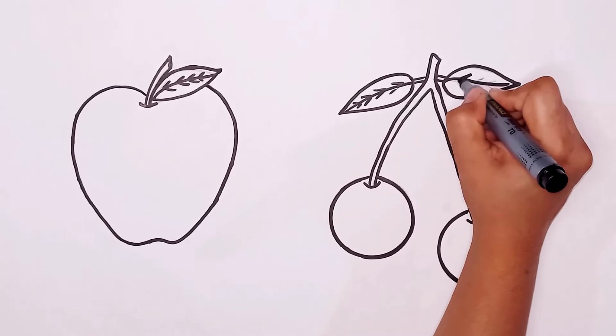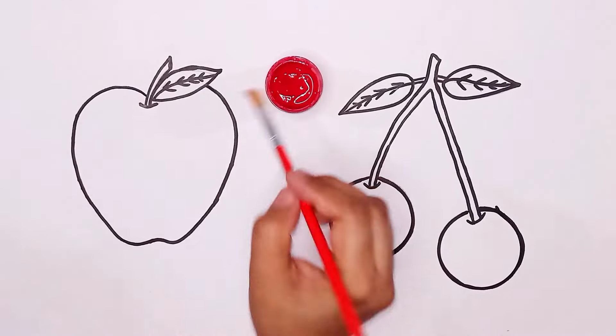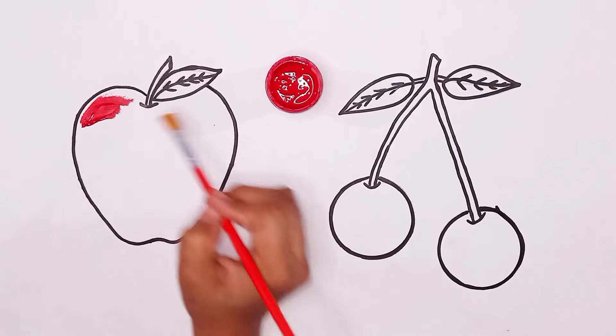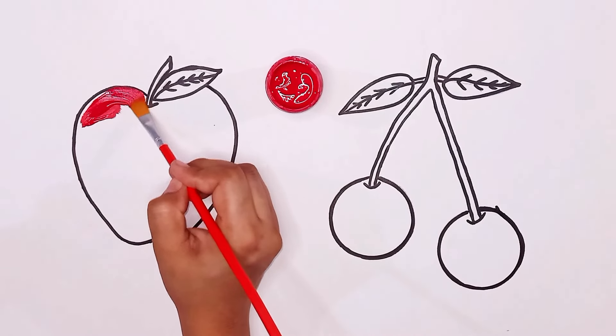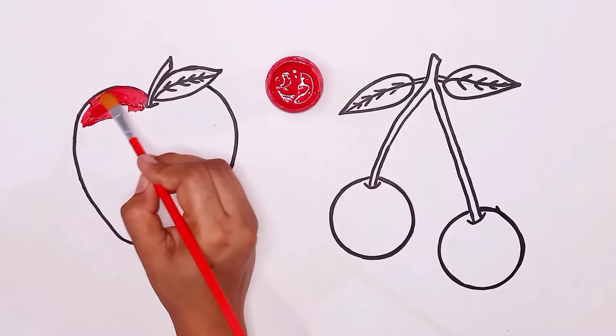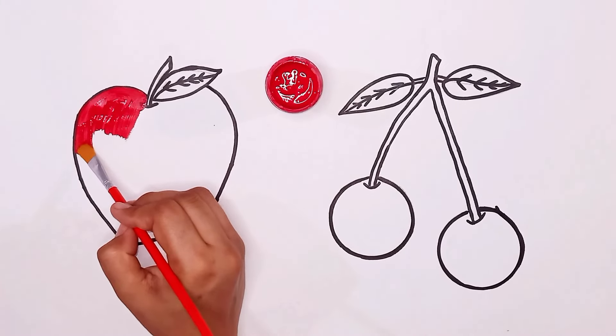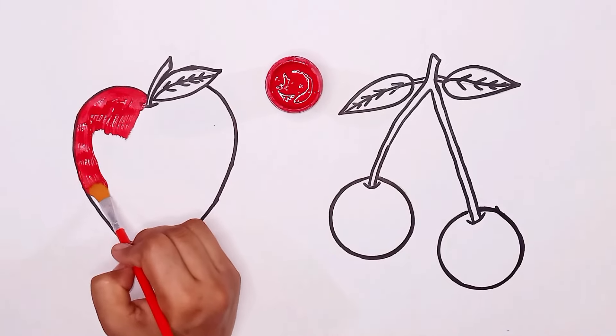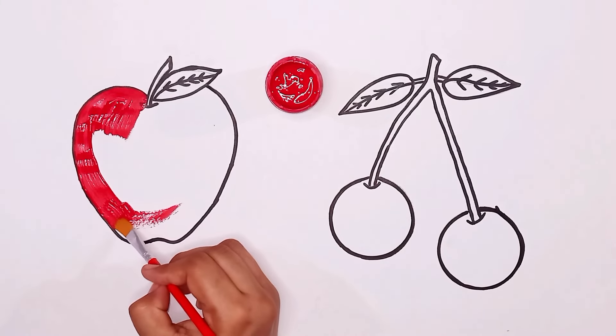I is for igloo, i-i-igloo. J is for jump, j-j-jump. K is for kangaroo, k-k-kangaroo. L is for lion, l-l-lion.